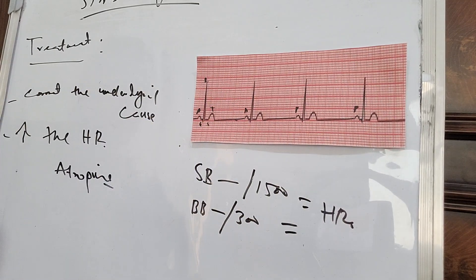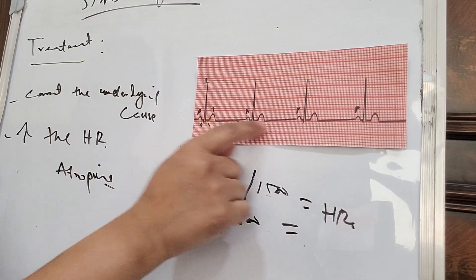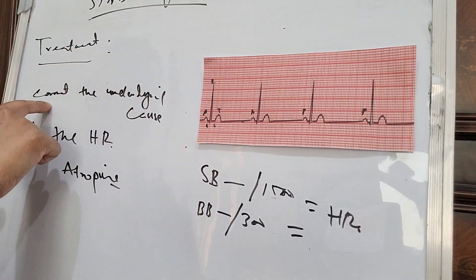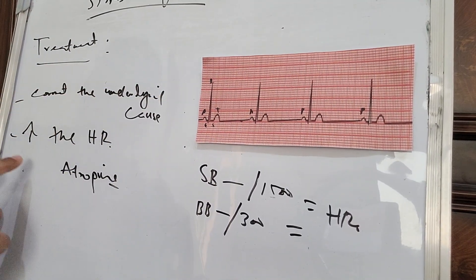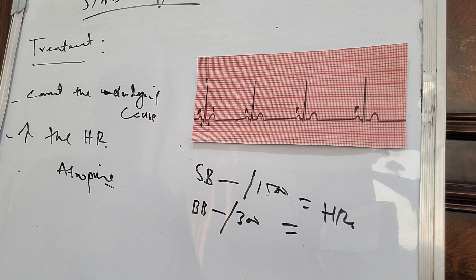Everything else is regular, normal, and uniform — except the heart rate is less than 60 beats per minute. The treatment is to correct the underlying cause and increase the heart rate. I hope you liked this lecture. If you have any questions, leave a message in the comments and I will reply. Please share and subscribe to my channel, and press the bell button to receive notifications of my next lecture. Thank you very much. Take care and Allah Hafiz.